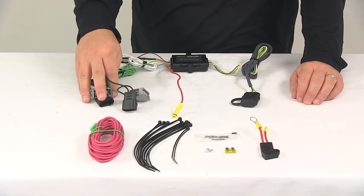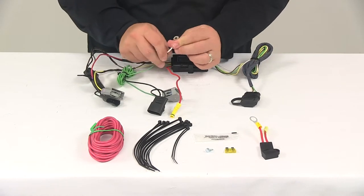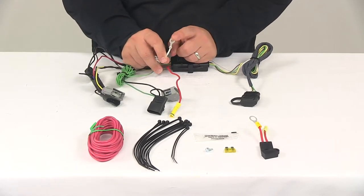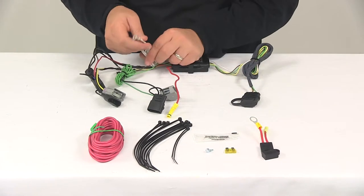Once you have all of those connected, you'll need to make a ground connection. Your ground wire is your white wire. It has a ring terminal pre-attached to it. That way you can get it grounded to a nice, clean metal location with the included grounding screw.